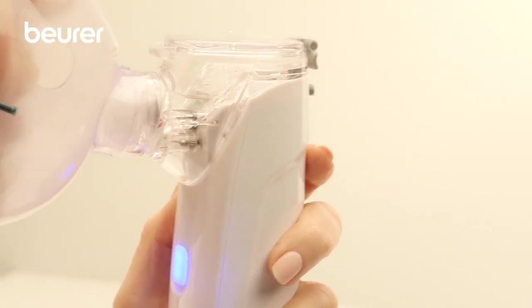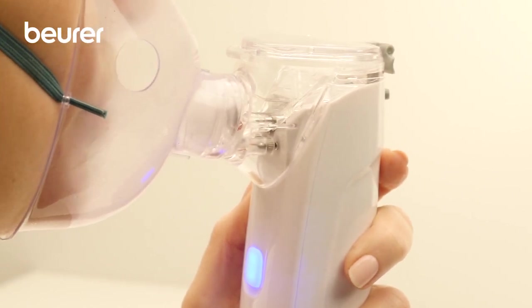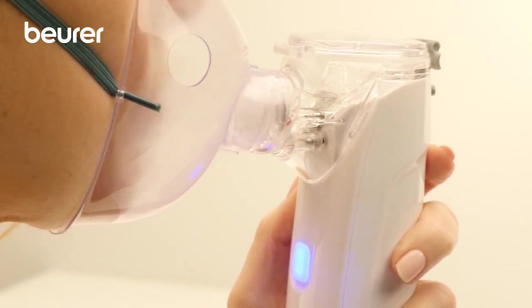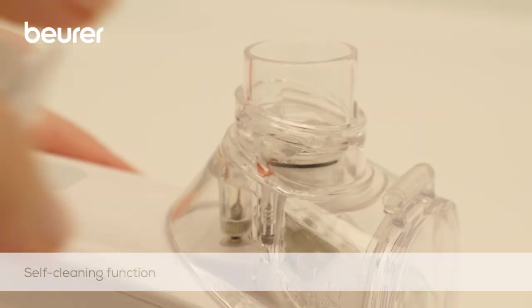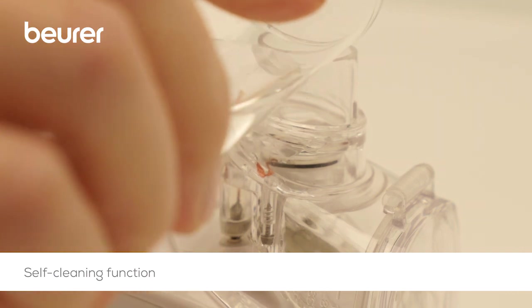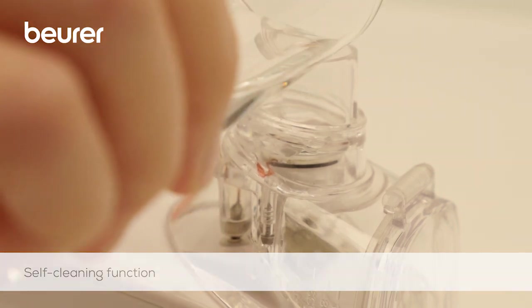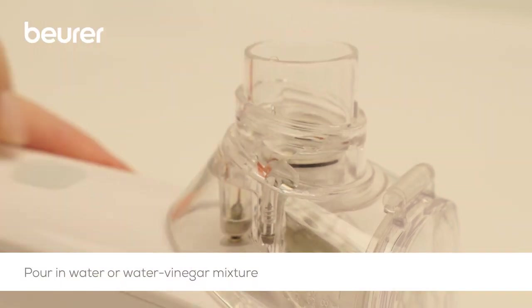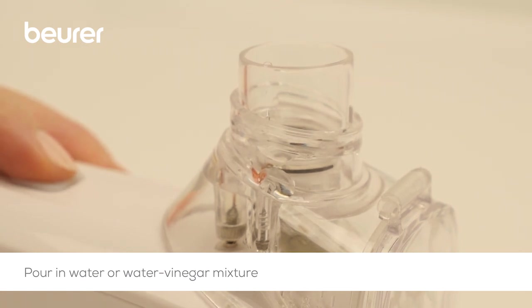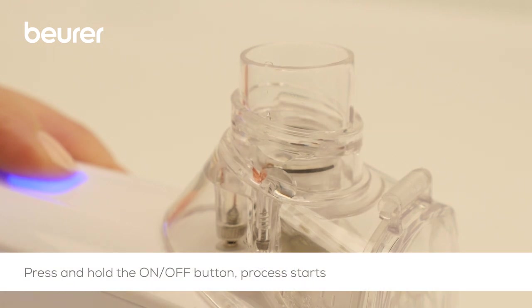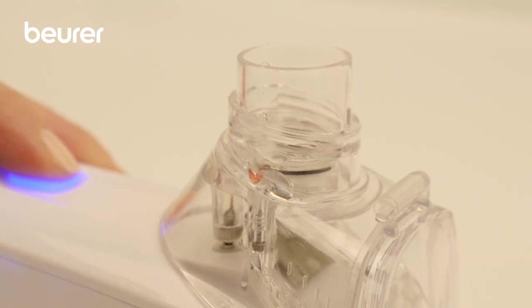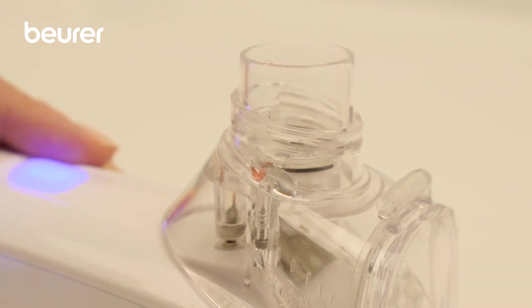To completely remove medication residue and eliminate any blockages, you can use the device's self-cleaning function. To do this, pour 0.5 to 1.0 ml of tap water or distilled water mixed with vinegar into the opening of the mesh atomiser. Press and hold the on-off button until the LED indicator briefly lights up violet. The cleaning liquid is now drawn out of the opening of the mesh atomiser into the medication container.